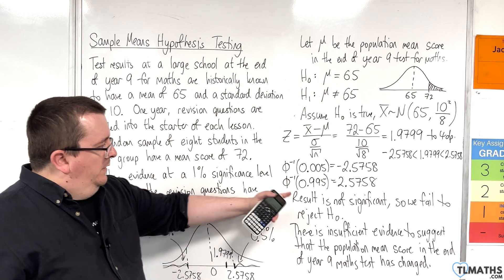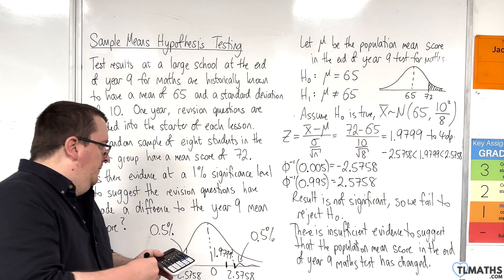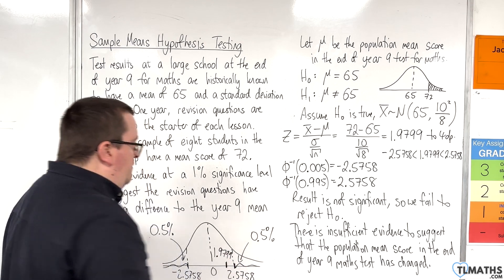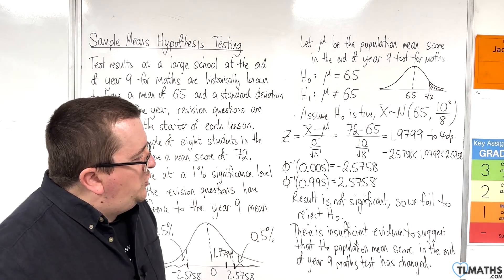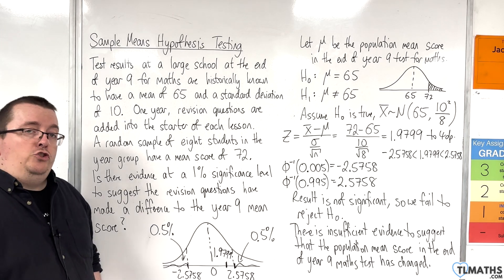The conclusion is, the result is not significant. We fail to reject H0. Only if it was in those regions would we reject. There is insufficient evidence to suggest that the population mean score in the end of year 9 maths test has changed.